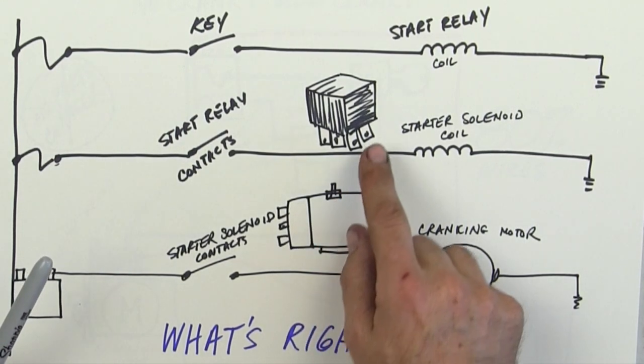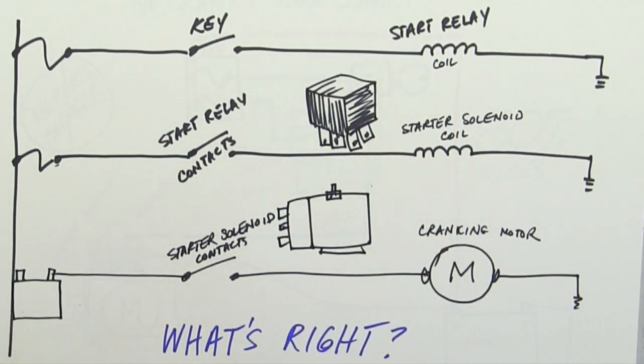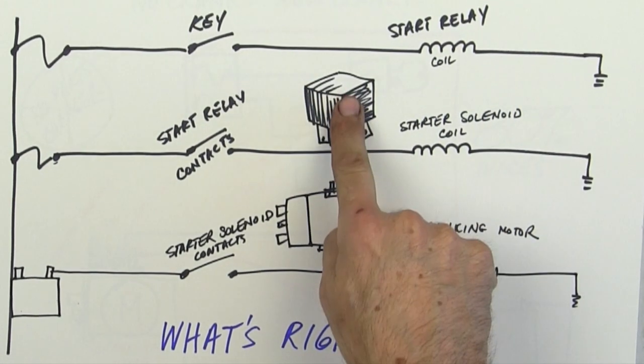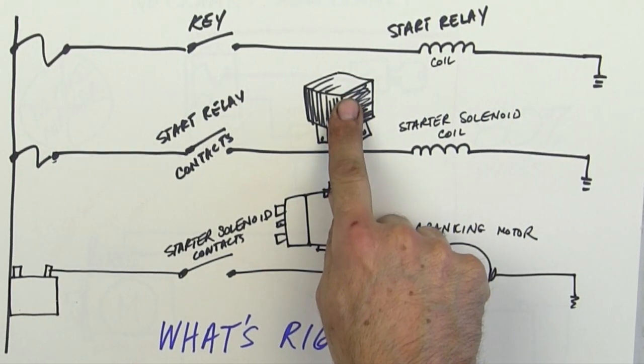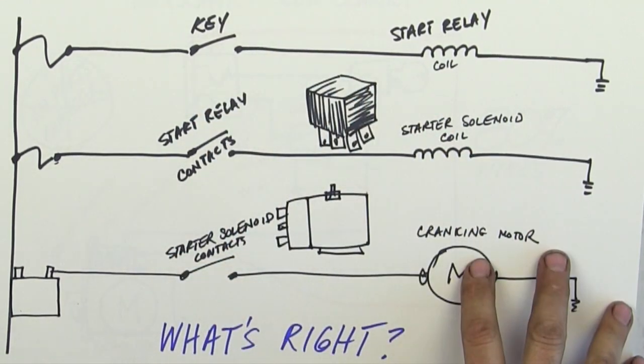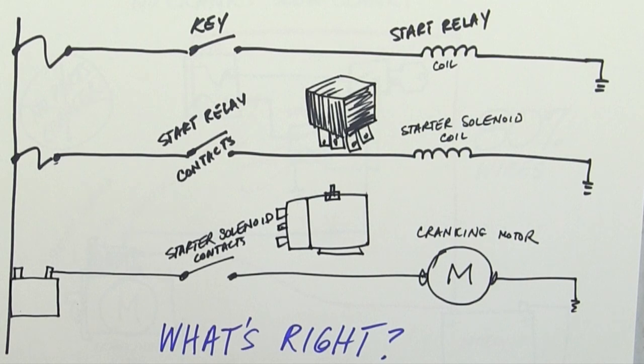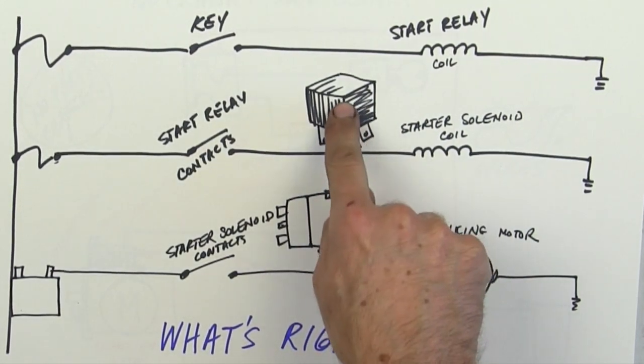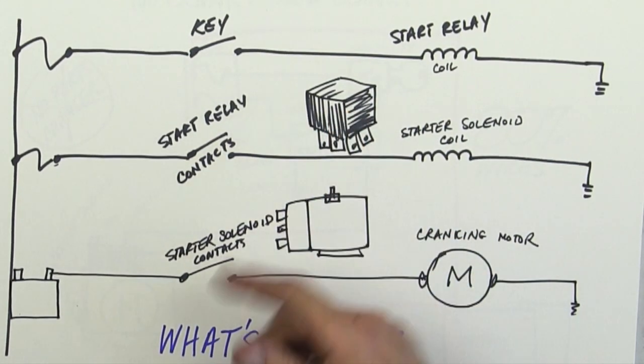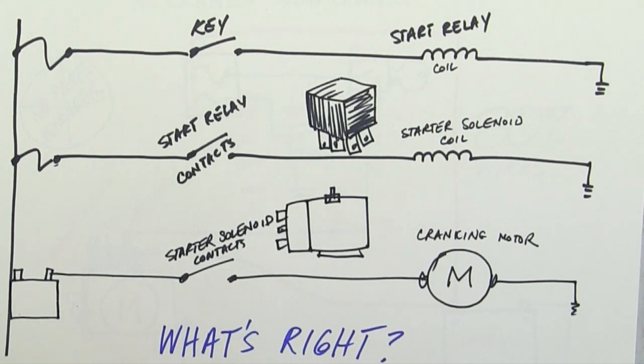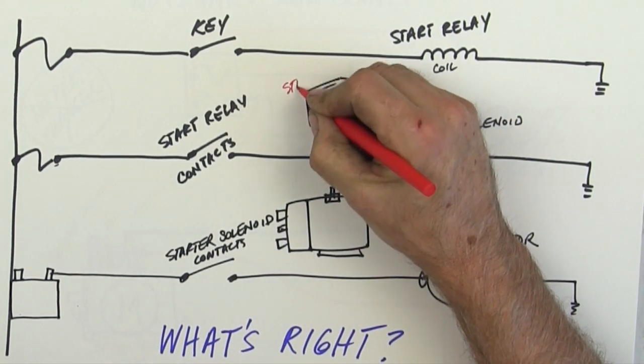So I'm going to show you a simple way to determine, from the start relay, whether or not the rest of the system is working, and whether or not the key is working. Because this is what I consider to be the heart of the system. So the start relay, in my opinion, you need to know where it is.